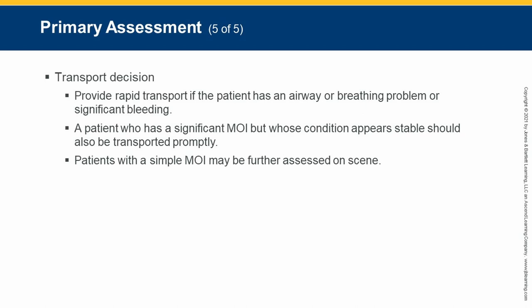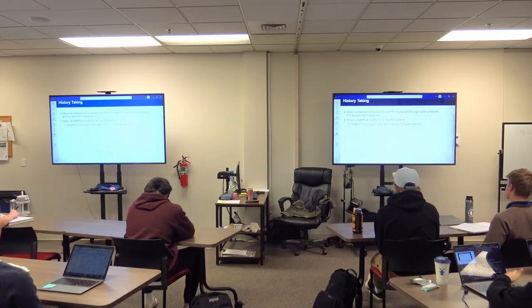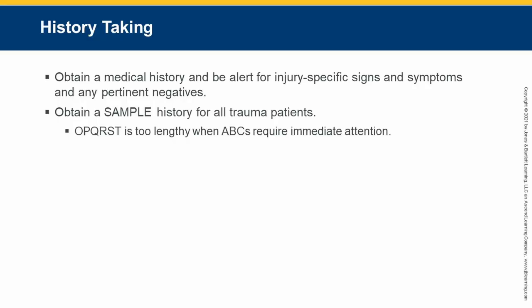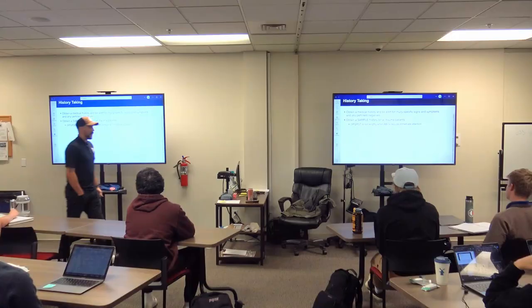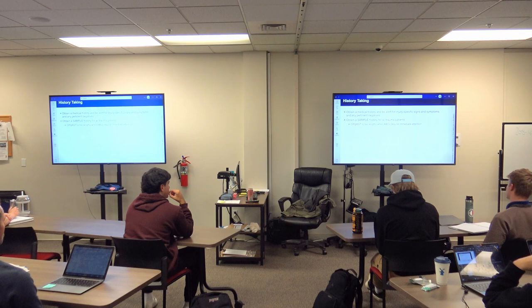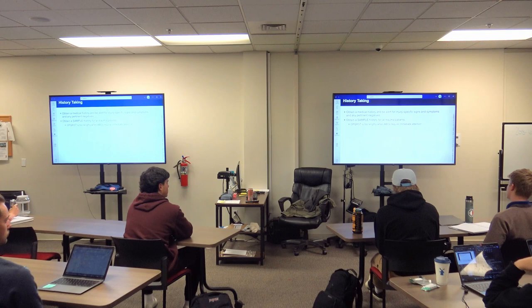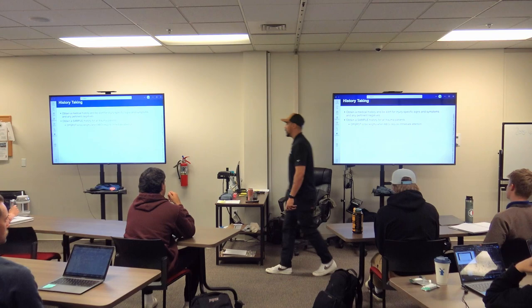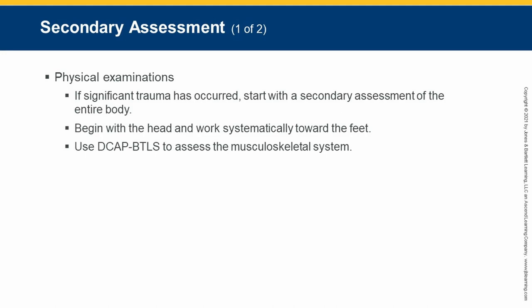Most orthopedic injuries are non-critical for transport — just make sure you're not missing something. For history-taking, correlate it with the orthopedic injury: a history of osteoporosis in an older patient implies weaker bones that may have fractured more easily. Outside of that, history and trauma don't tend to correlate heavily — trauma tends to be more acute.